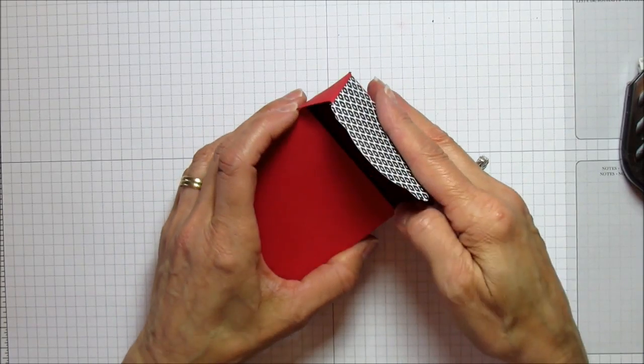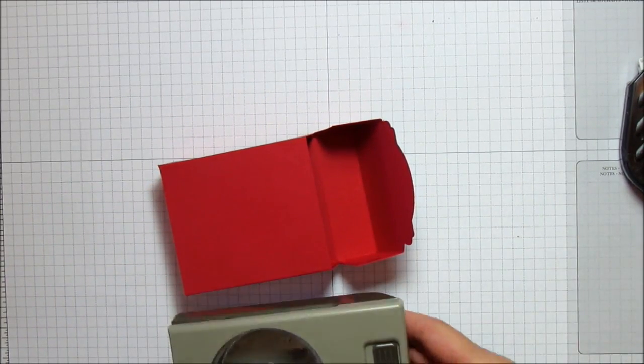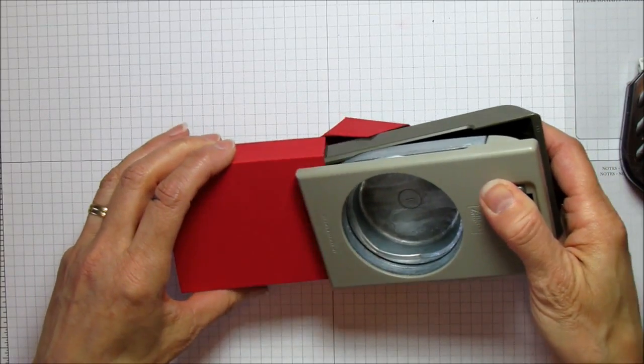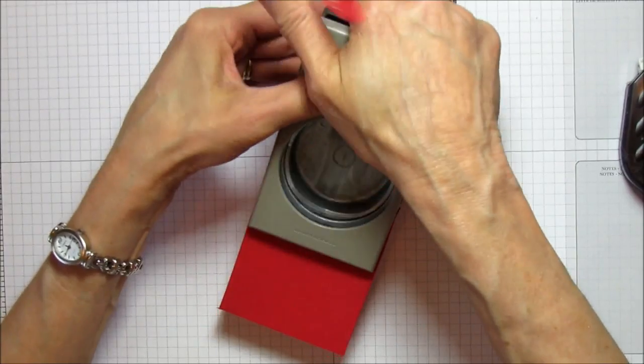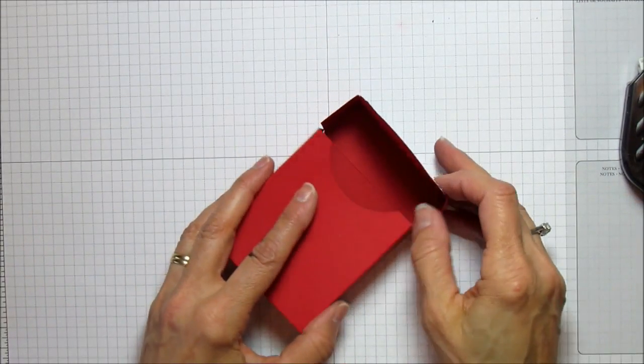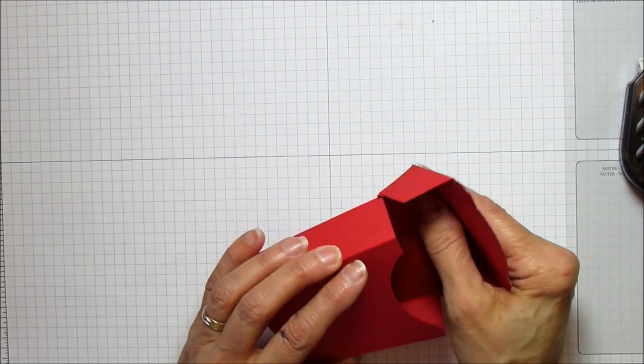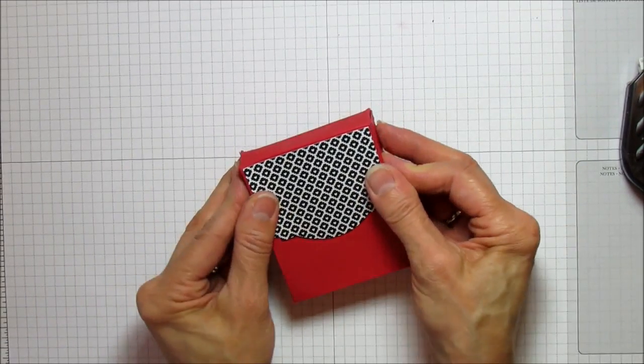What I want to do next is get my 2.5 inch circle punch. You could do this before, but I'm just going to make a little notch because I like the look of that - it looks professional. Then we're ready to close up our box just like that.